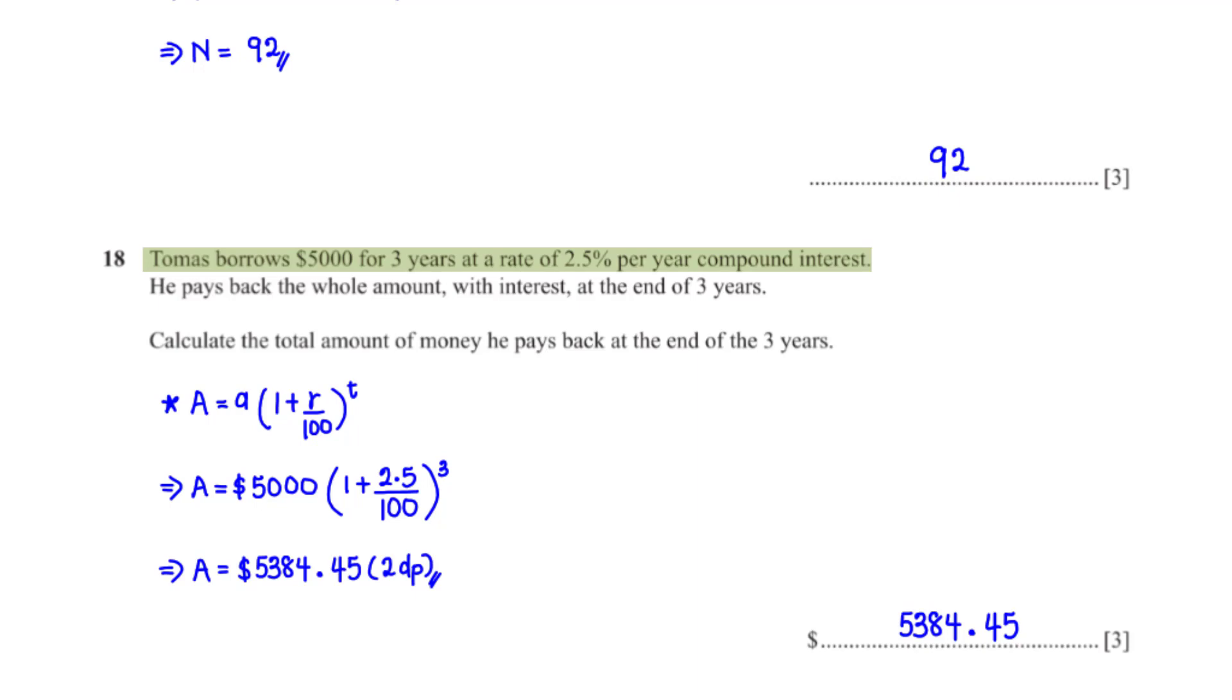Thomas borrows $5,000 for 3 years at a rate of 2.5% per year compound interest. He pays back the whole amount with interest at the end of 3 years. Calculate the total amount of money he pays back at the end of the 3 years. In this case, we need to apply the compound interest formula. Big A represents the final amount of money he pays back, which is what we are finding. Small a represents the amount he borrowed, which is $5,000. R is the annual rate, which is 2.5%. And T is the time duration in years, which is 3. When we type this into the calculator, we get $5,384.45 rounded to the nearest cent.